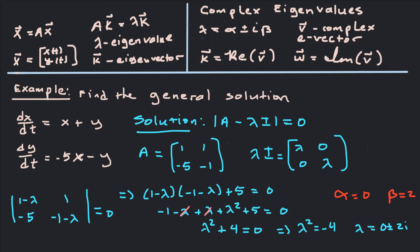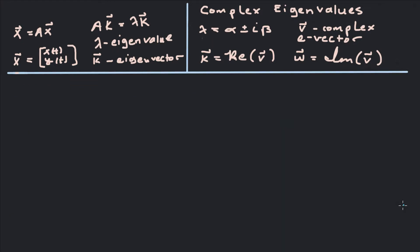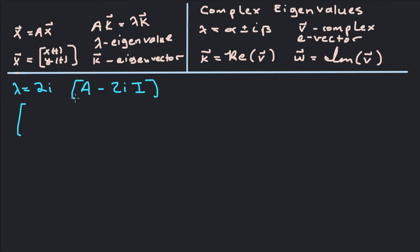Now we've got to find the corresponding eigenvector. We'll find one complex eigenvector and then take its real and imaginary parts to get the eigenvectors for our general solution. We'll use lambda equals 2i — you can pick minus 2i, but this one's a little easier, and it doesn't matter since they're just off by a negative sign. So we solve (A − 2i·I)·v = 0.